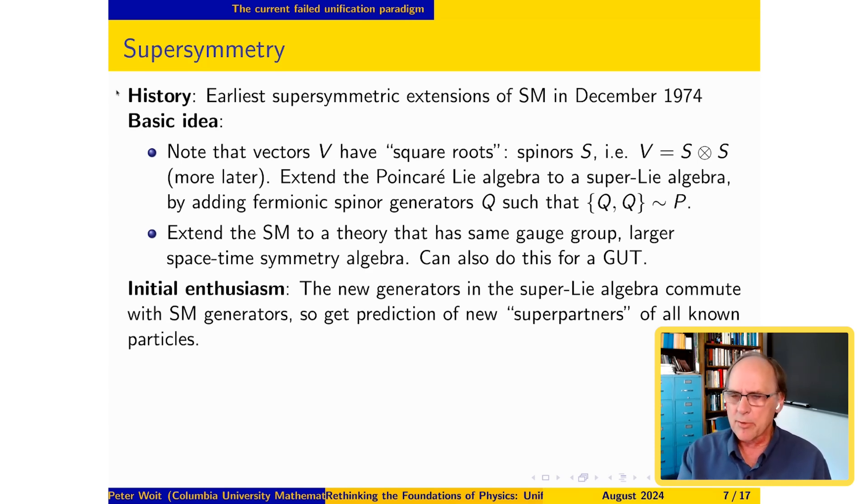What you would have really liked to happen was to look at the list of particles in the standard model and find two of them related by one of these supersymmetry generators. If you had two particles that differed by spin one-half and had the same standard model charges, that would be a good candidate — you would identify them as superpartners.